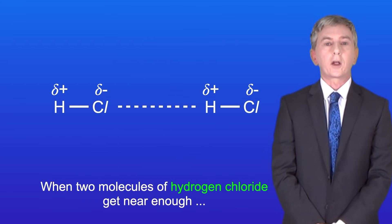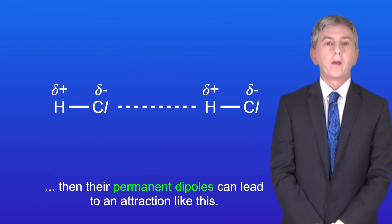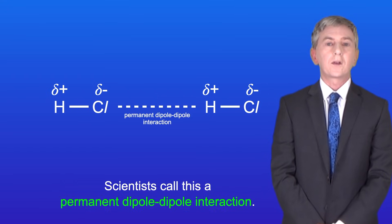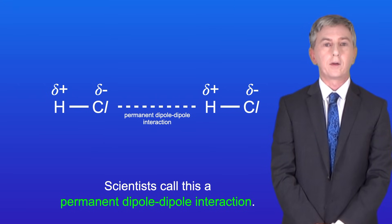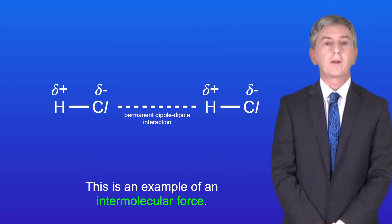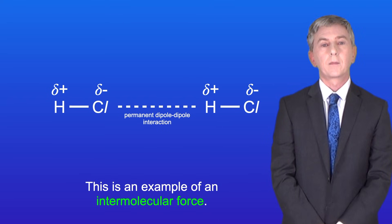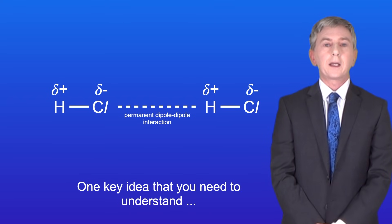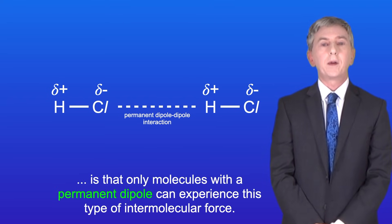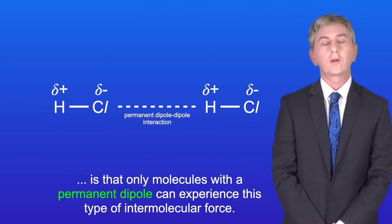When two molecules of hydrogen chloride get near enough, their permanent dipoles can lead to an attraction. Scientists call this a permanent dipole-dipole interaction, and this is an example of an intermolecular force. One key idea you need to understand is that only molecules with a permanent dipole can experience this type of intermolecular force.